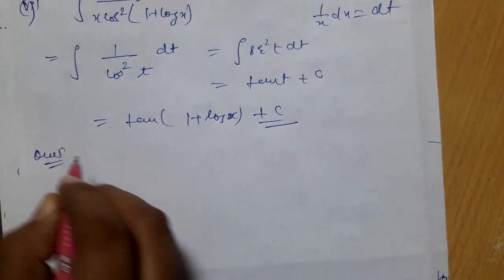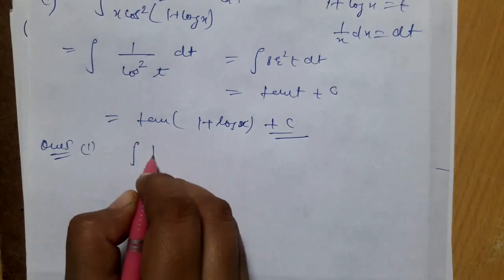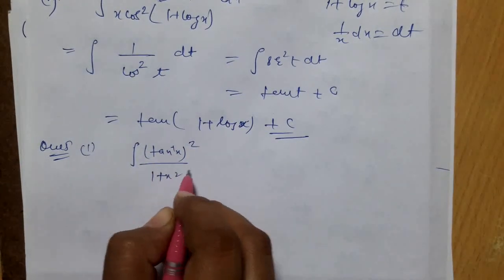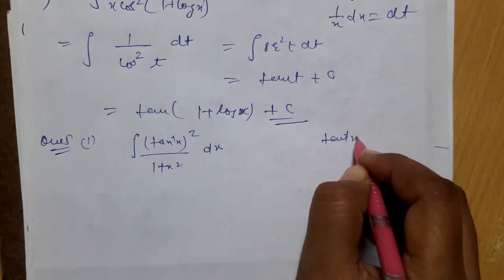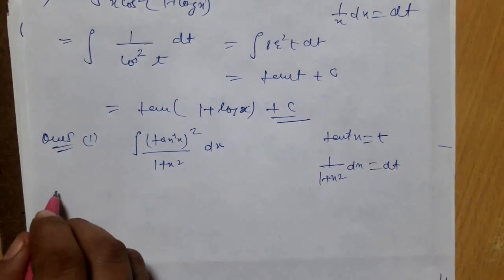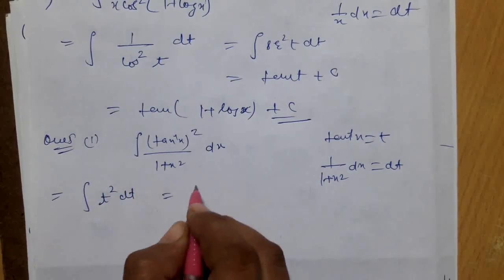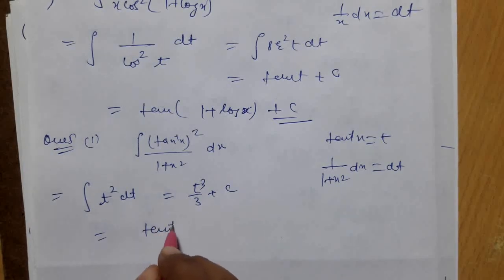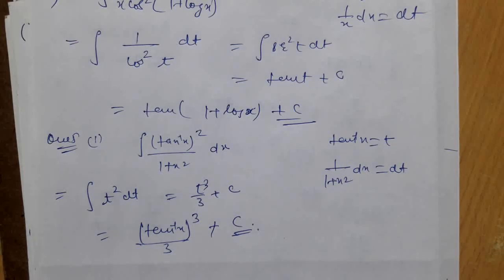Question 5, part 1: integration of (tan⁻¹x)² / (1 + x²) dx. Put tan⁻¹x = t, so 1/(1 + x²) dx = dt. The integral becomes ∫t² dt = t³/3 + c. The answer is (tan⁻¹x)³ / 3 + c.